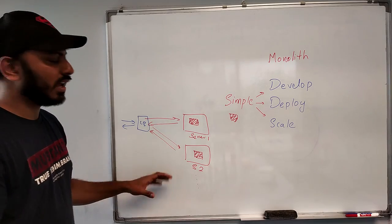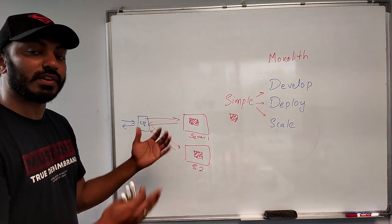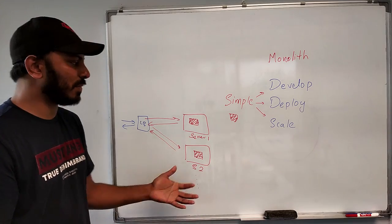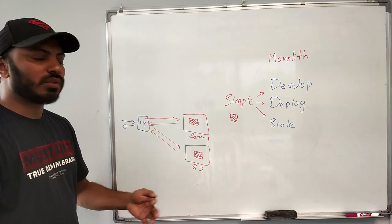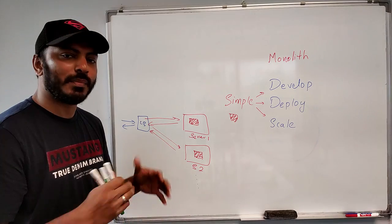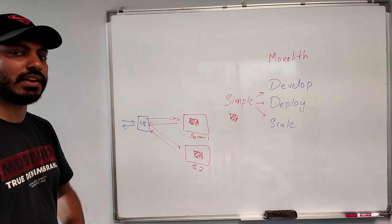Now, it is simple to deploy, simple to scale, and simple to develop because we have only one repository and all the developers are working on it, right? But it gets complex when you start getting more and more customers. Now it's okay if you have 1,000 requests per second or 1,000 users or 10,000 users, maybe 50,000 users, it's still fine to have monolithic architecture. But what happens when you have millions of users, then this architecture style will get complicated.